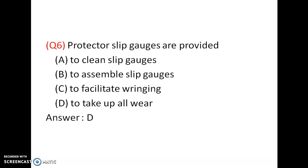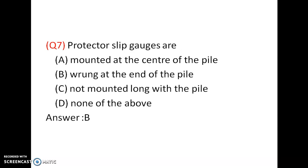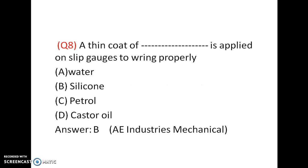The protector slip gauges are 1.5 mm at one end and 1.5 mm at the other end. Protector slip gauges are rung at the end of the pile. Option A — mounted at the center of the pile — is not correct. Option C — not mounted along with the pile — is not correct. The answer is B: rung at the end of the pile. At the end of the pile the two protector slip gauges are provided.